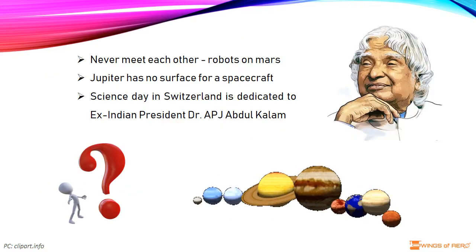Did you know, Mars is the only planet populated entirely by robots. Yet, they will never meet each other. Jupiter has no surface for a spacecraft to land on because it is made mostly from helium gas and hydrogen. The massive pull of Jupiter's gravity squeezes the hydrogen so hard that it is liquid.